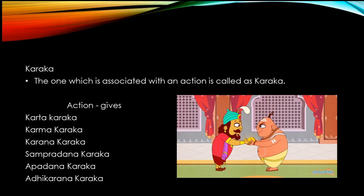The next one is Adhikarana Karaka. Now, where does the king give? The answer is simple — he gives it from his palace. So, Adhikarana Karaka shows us the location. All these words are associated with the action 'gives,' so these are the different cases in Sanskrit. The first one is Karthakaraka, the second is Karmakaraka, the third is Karanakaraka, the fourth is Sampradanakaraka, the fifth is Abhadana Karaka, and the sixth is Adhikarana Karaka.